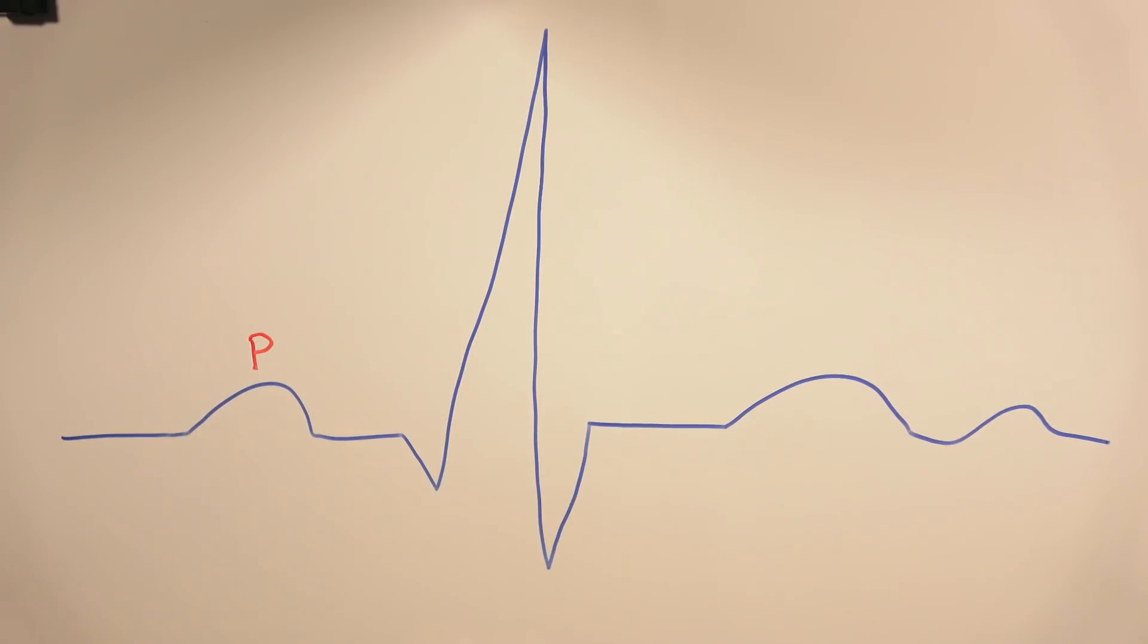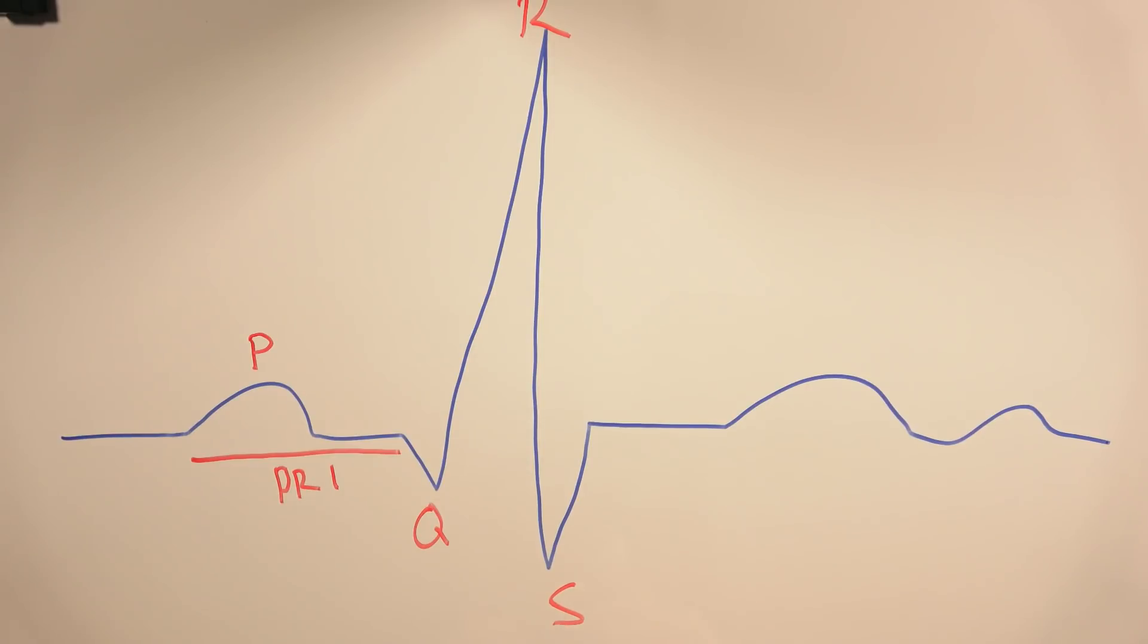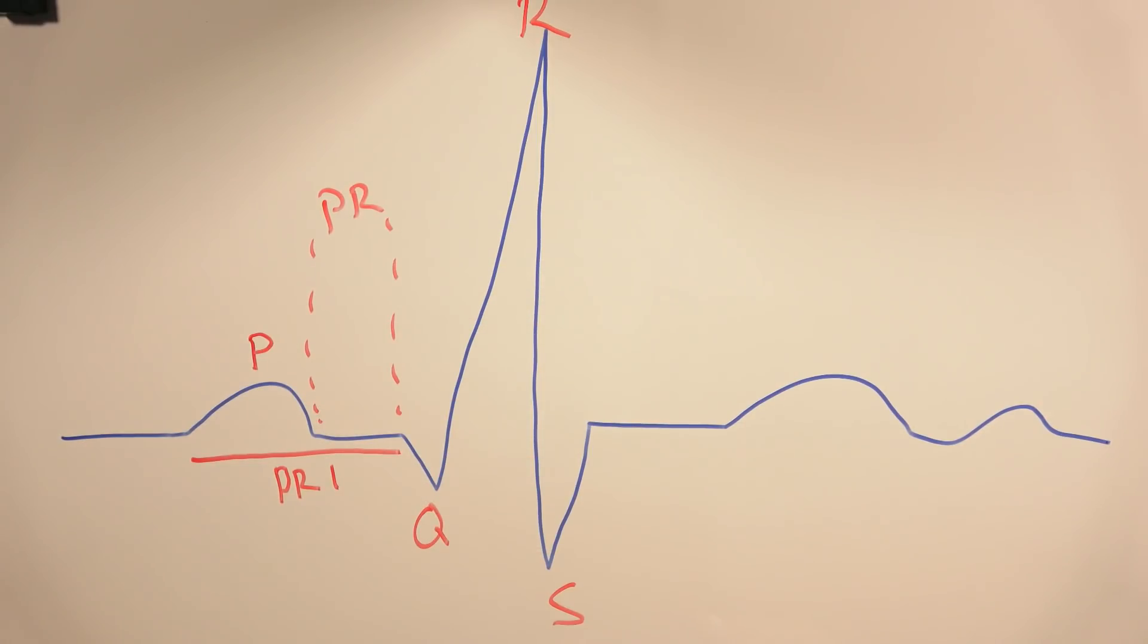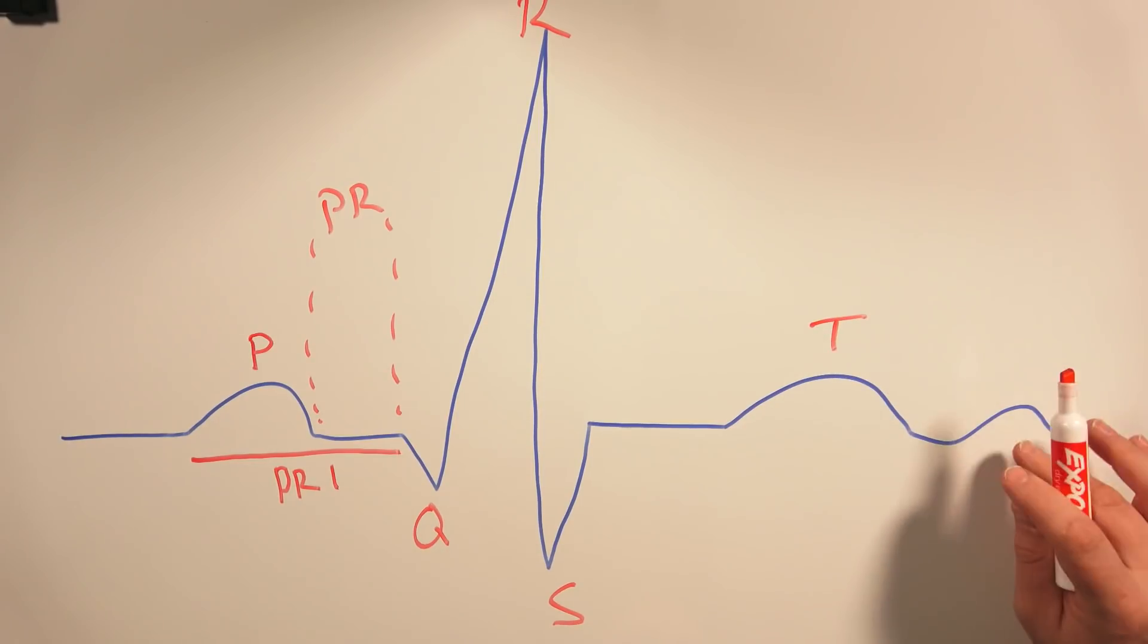First of all, this first little bump is called a P wave. The distance between here and here is called the PR interval, or you might see it as PRI. Then you have this spike right here, called your QRS complex. Then you have this little section right here that's called the PR segment. After that you have this first little bump that's called your T wave. Then sometimes you have this last little one here that's called a U wave.